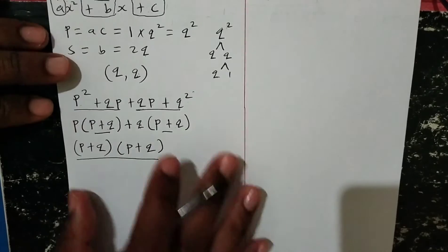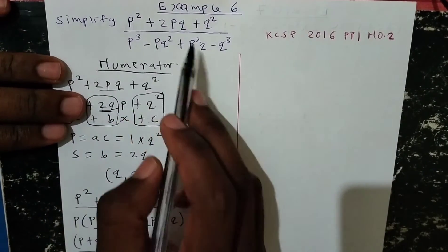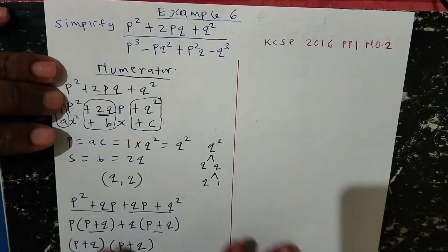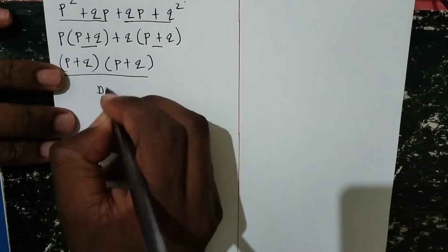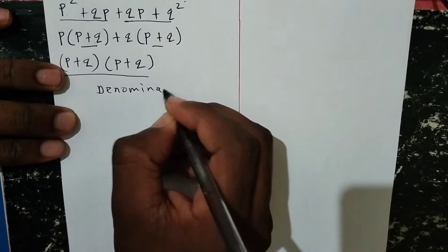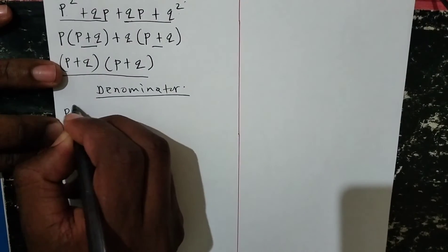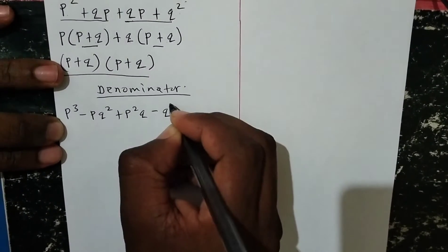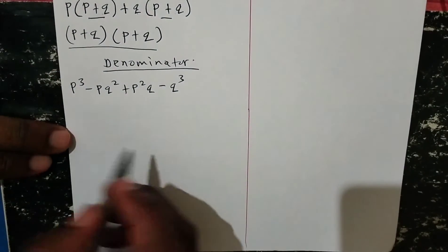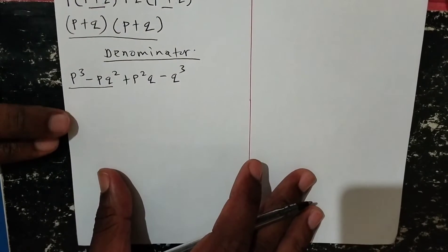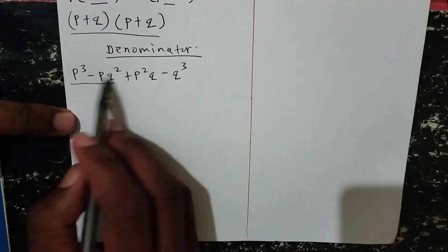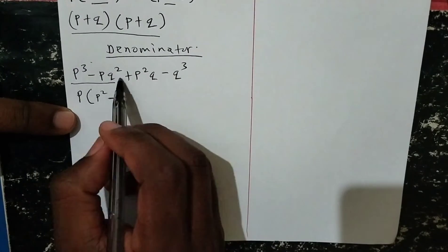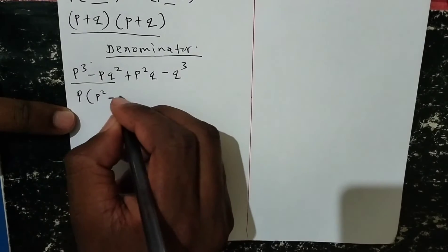Moving to the denominator: we are given p cubed minus pq squared plus p squared q minus q cubed. This is not a quadratic, so we find common factors between pairs of terms. Between p cubed and pq squared, p is common, so we factor out p to get p(p squared minus q squared).